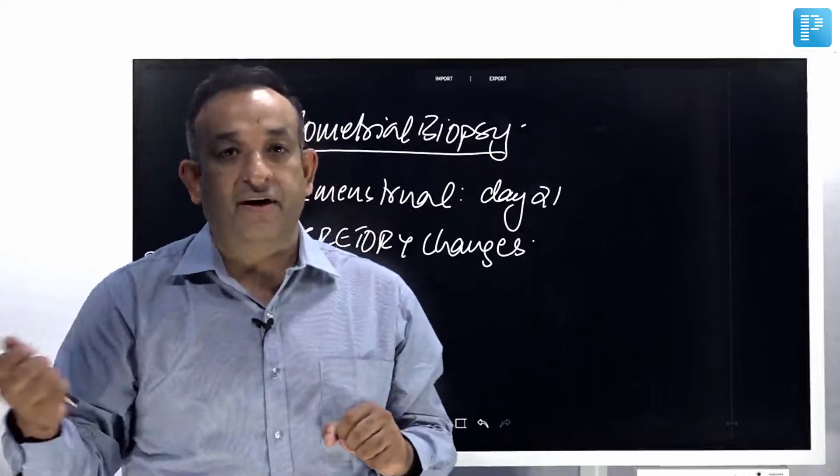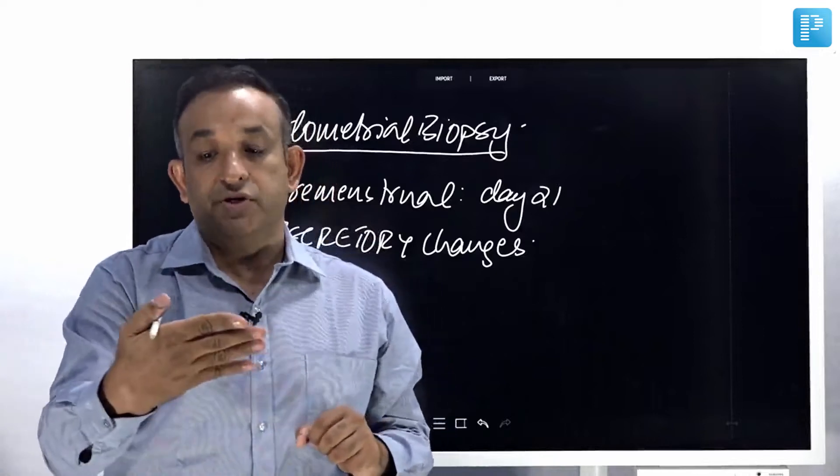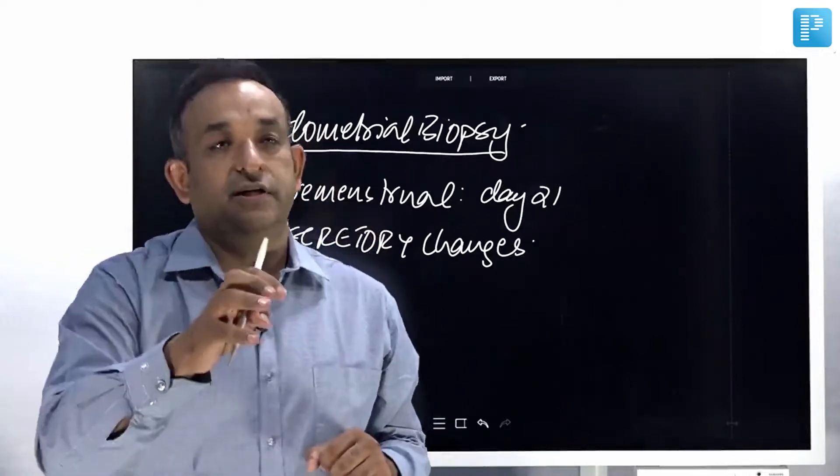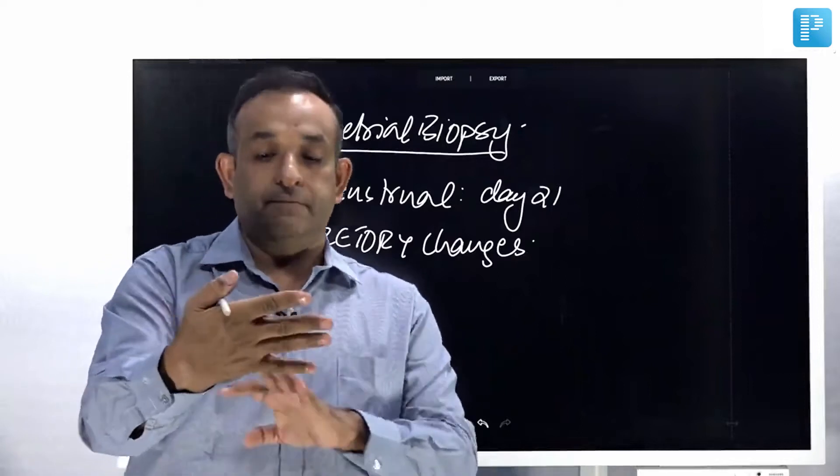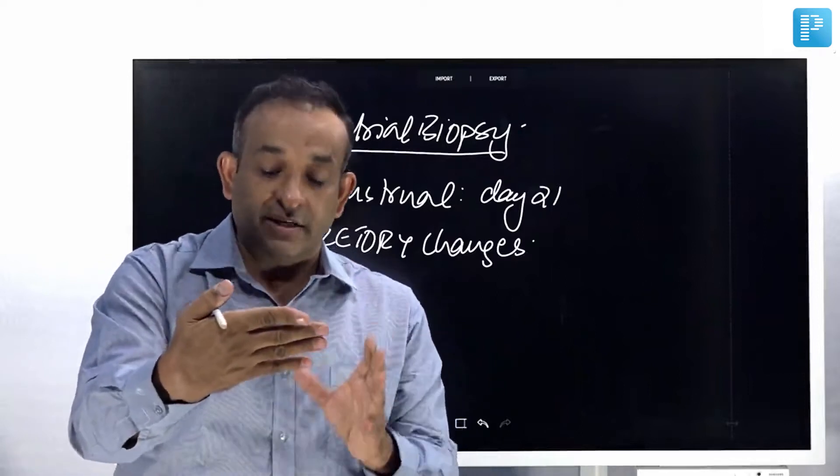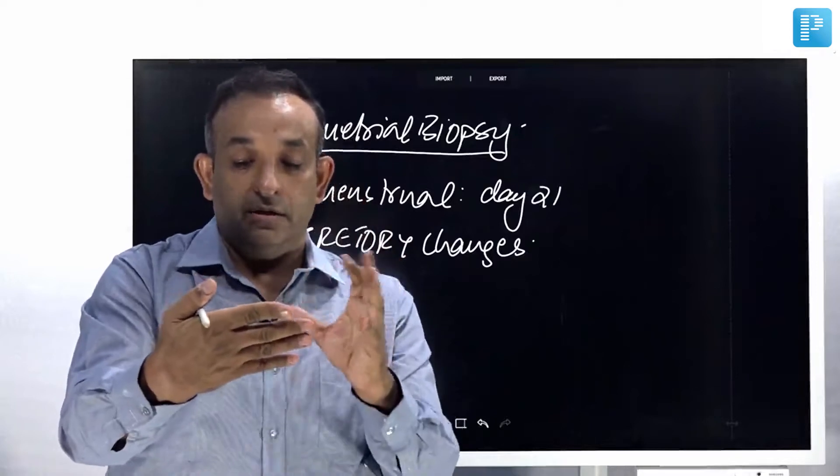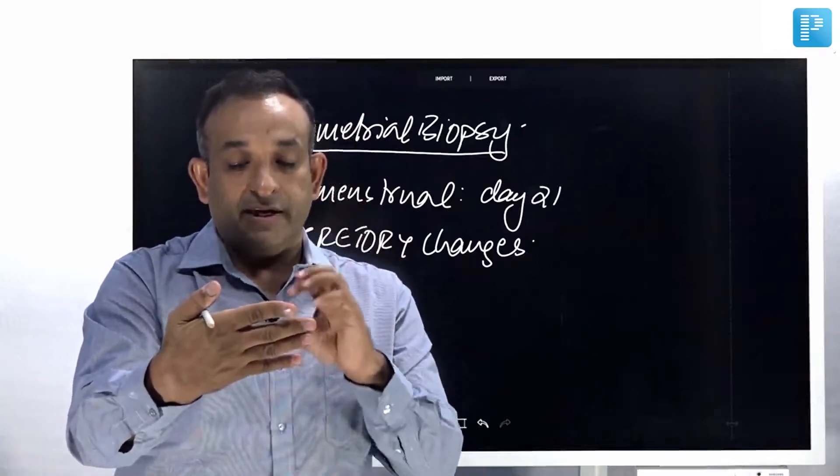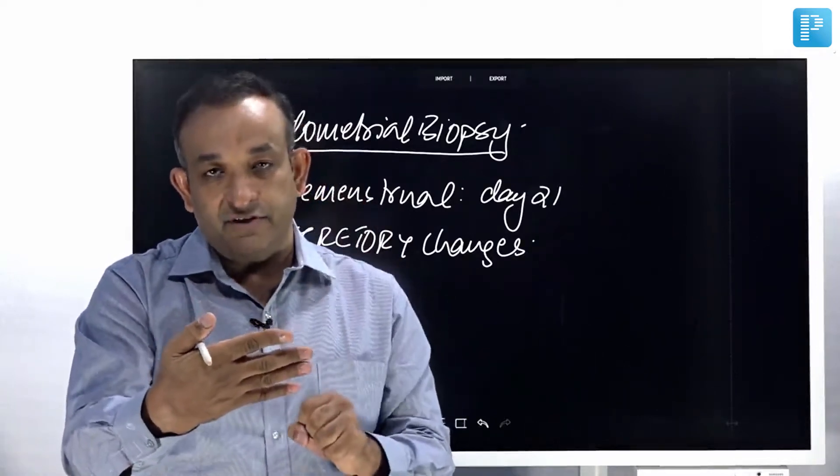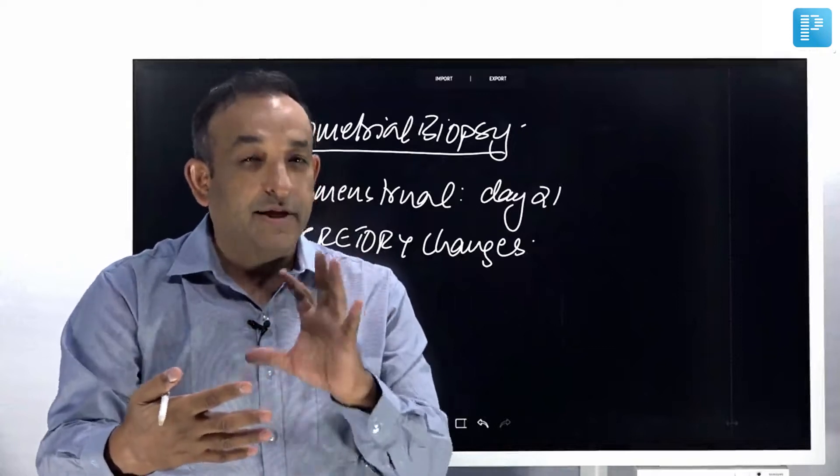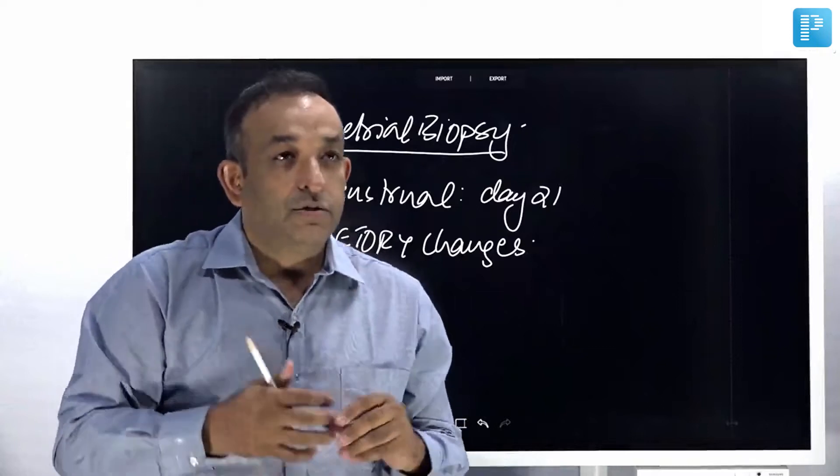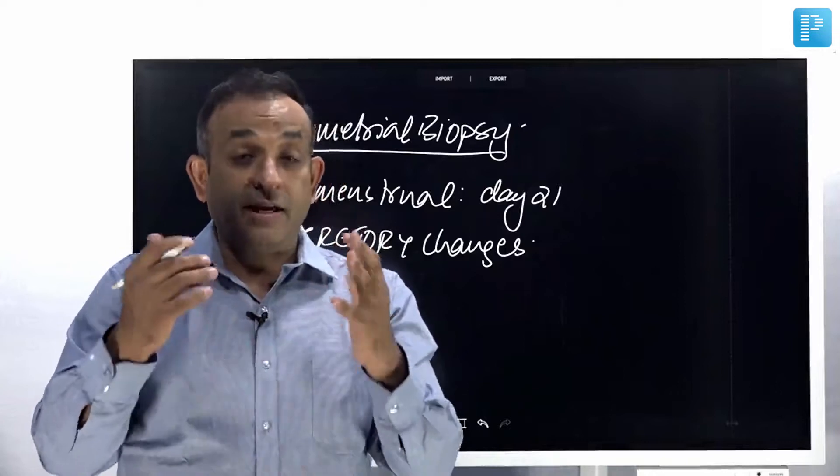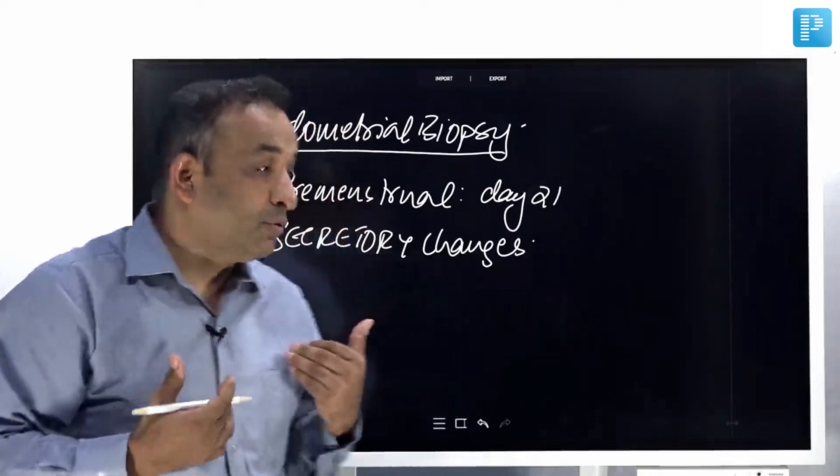I can scrape out the endometrium on day 5 and they can say it's menstruating endometrium. Or I can take it on day 20, and they can look at the secretory activity of the glands, see the sub-nucleolar vacuolation, see early lymphocytic infiltration, and know it is around day 20 of the menstrual cycle. When they look at the endometrium, they can tell us what day it belongs to.